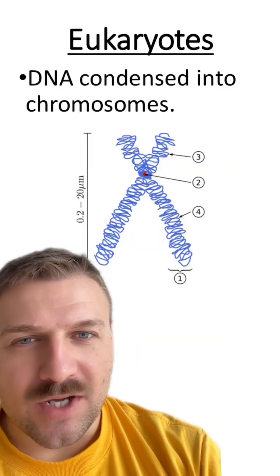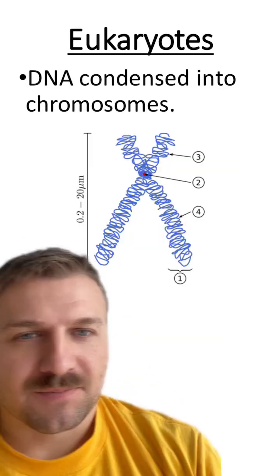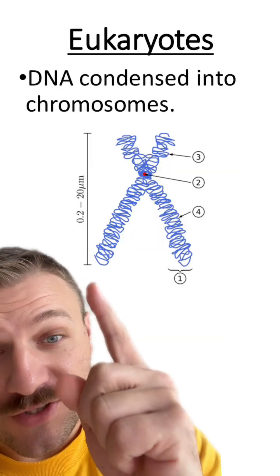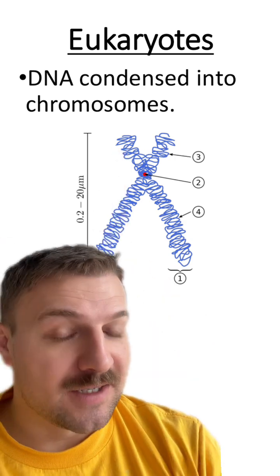Typically, eukaryotic DNA condenses into chromosomes that look like this, where they have a start and an end point, which means they're linear.